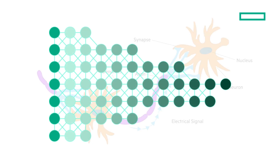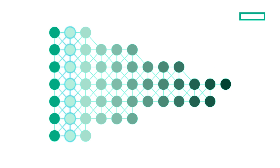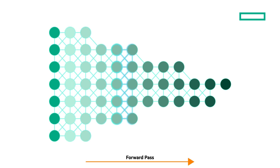In a deep learning network, each layer of nodes trains on a distinct set of input features based on the preceding layer's output. Training first walks through the entire network in a full forward-pass sweep that starts at the input layer on the left and works its way through each hidden layer until it reaches an output.